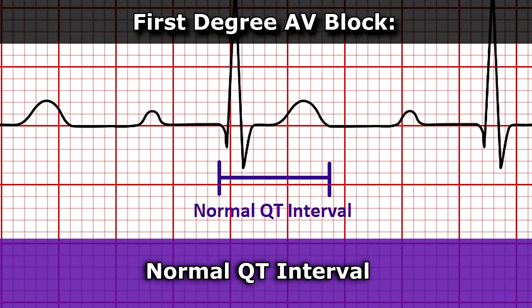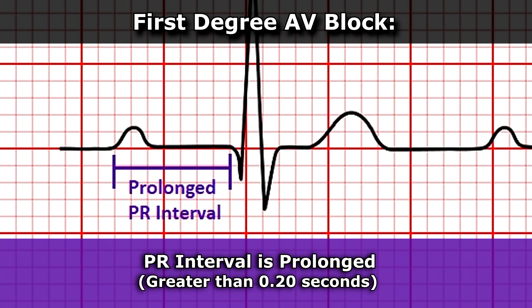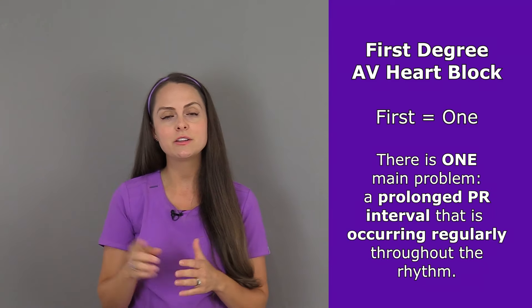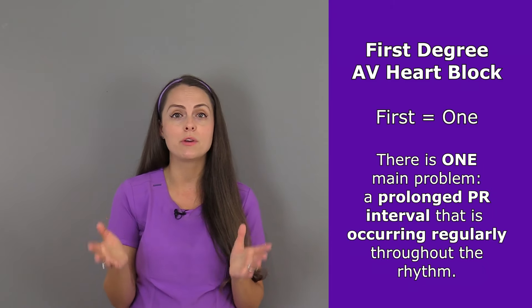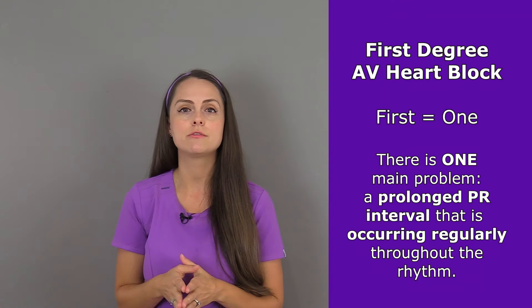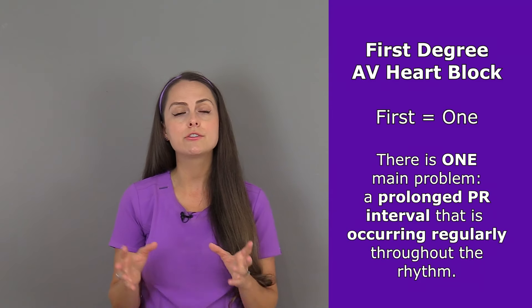You're going to have a normal QT interval, but when you go to measure the PR interval it is going to be prolonged — greater than 0.20 seconds. As you can see with this rhythm here, we have a prolonged PR interval. That is the only difference between this and a sinus rhythm. To help you remember this heart block from all the others: first means one, so we're dealing with really one big problem — a prolonged PR interval that is occurring regularly throughout the rhythm.